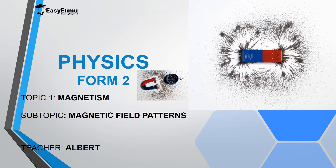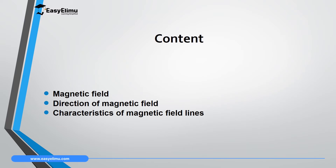In this lesson, we are going to discuss magnetic field patterns. We will start from the magnetic field and see how it is formed around a magnet. My name is Albert, and I hope you will enjoy this lesson. By the end of this lesson, I expect you to be able to describe a magnetic field around a magnet, explain how to determine the direction of a magnetic field, and describe the characteristics of magnetic field lines.